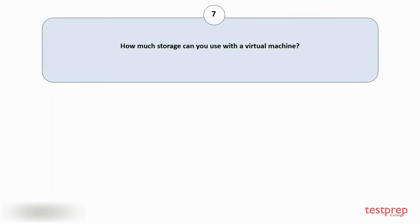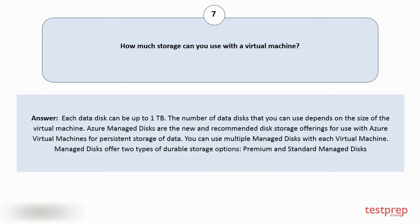Question number seven: how much storage can you use with a virtual machine? Your answer is: each data disk can be up to one terabyte. The number of data disks you can use depends on the size of the virtual machine. Azure managed disks are the new and recommended disk storage offerings for use with Azure virtual machines for persistent storage of data. You can use multiple managed disks with each virtual machine. Managed disks offer two types of durable storage options: premium and standard managed disks.